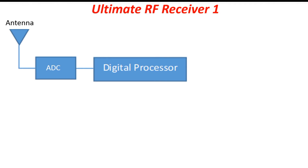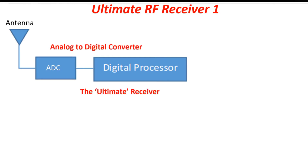The antenna captures electromagnetic waves from free space and converts them into a voltage signal. The ADC is going to take that voltage, digitize it, and then the rest is processing with digital processors. So that's it — RF design done, and our advancement from digital communication and digital signal processing is basically ending RF.